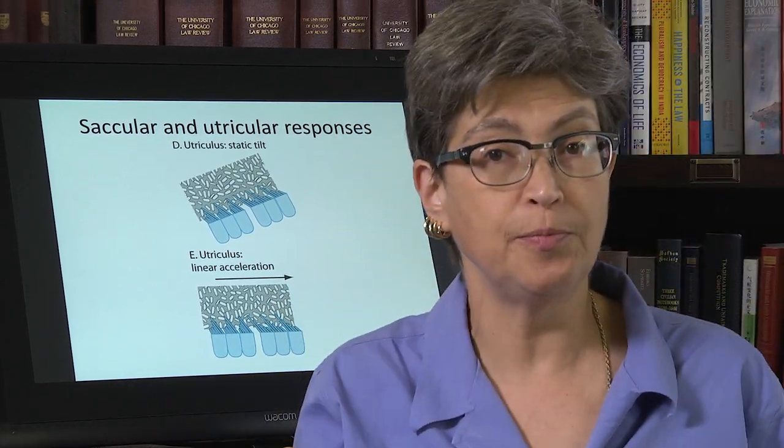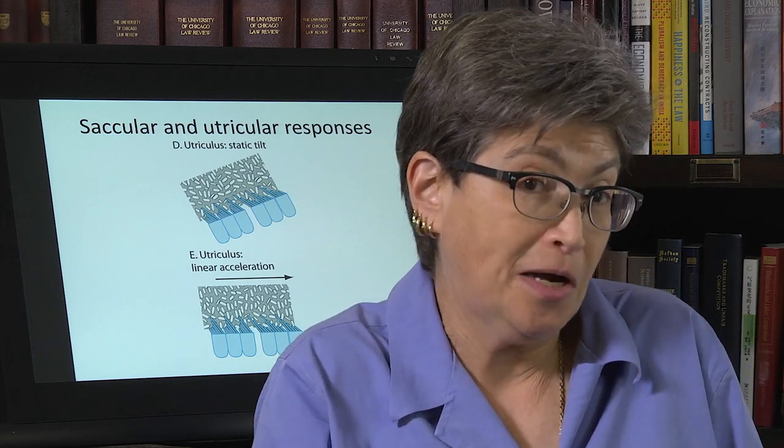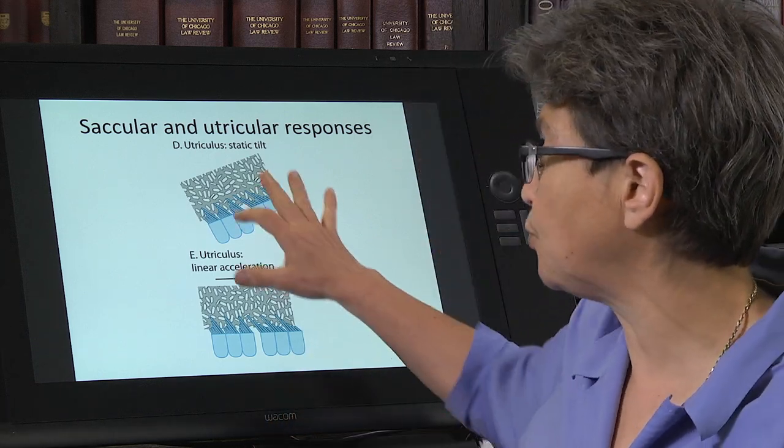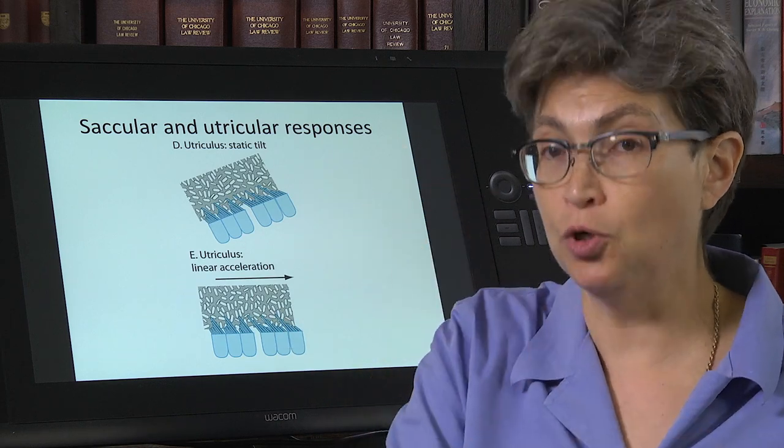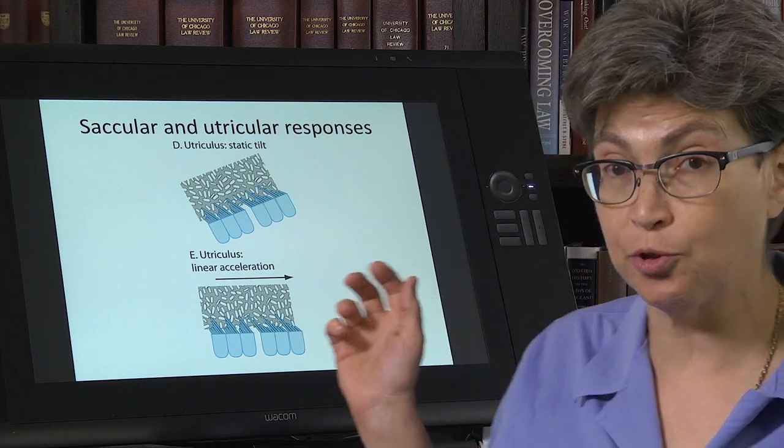So that's one problem. That is one problem with the, particularly with the utriculus and sacculus, messages is that they're not unambiguous. They are ambiguous and this is pretty easily solved because we can get information from multiple vestibular end organs.